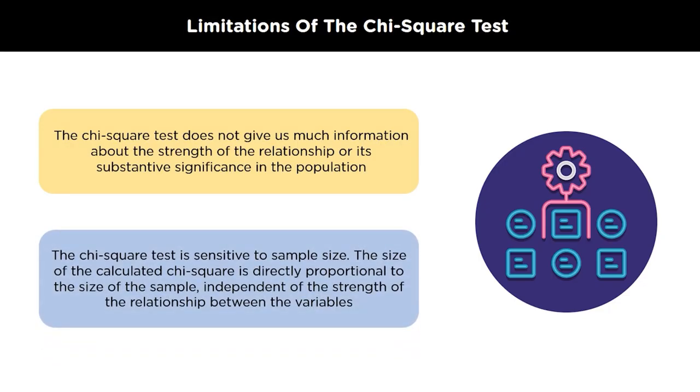The chi-square test is also sensitive to sample size. The calculated chi-square statistic is directly proportional to the size of the sample, which is independent of the strength of the relation between the variables.